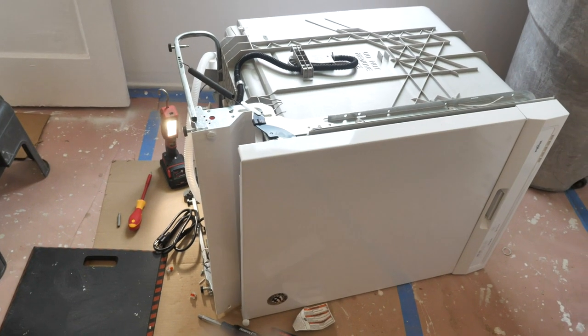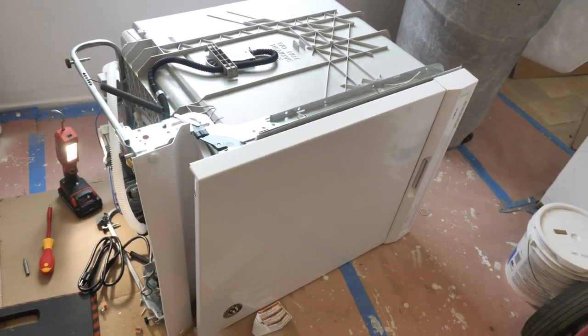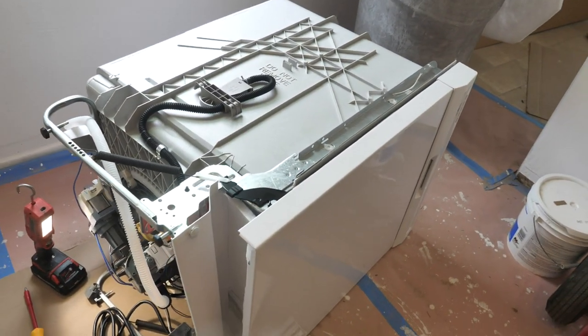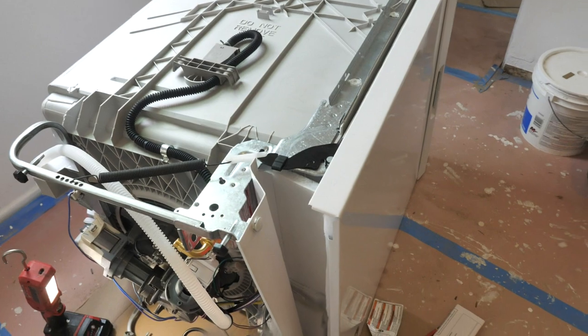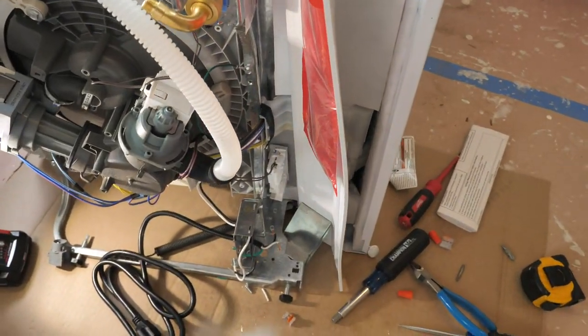The reason I have the dishwasher on its side is because the electrical hookup is on the bottom of the unit. See, it's right here.